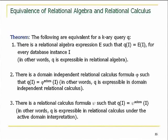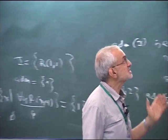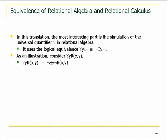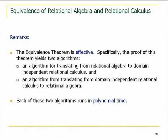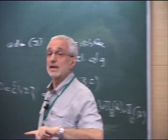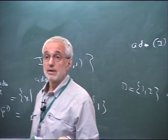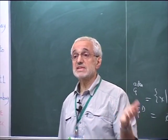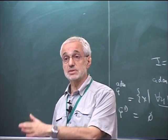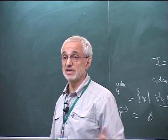So, the precise statement of Codd's theorem is: under the active domain semantics, algebra and calculus have the same expressive power. Or equivalently, if your formula is domain-independent, they have the same expressive power regardless. The equivalence is effective: we can go from algebra to calculus and from calculus to algebra. Therefore, any undecidability result proved for calculus translates to algebra and vice versa.